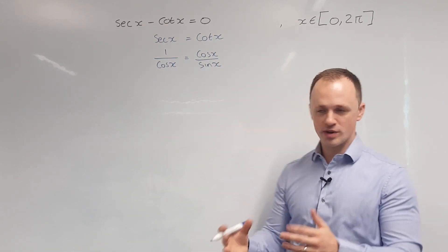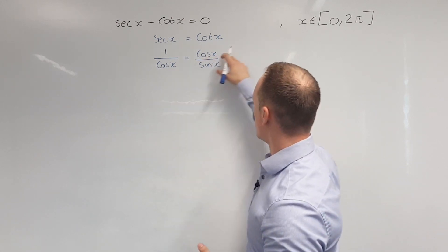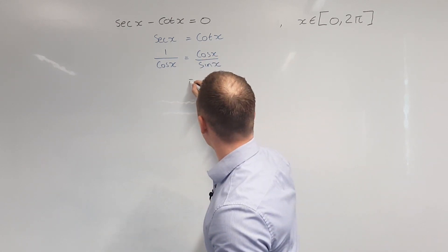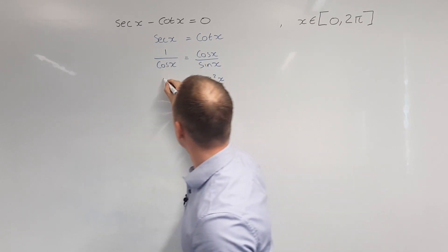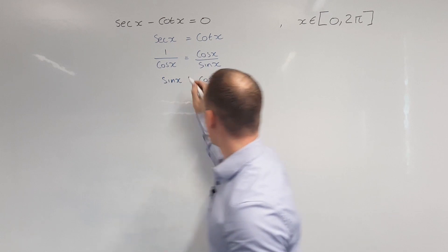Next, we're going to clear the fractions by multiplying up. So we're going to multiply up by cos x on the right, so we get cos squared x. And we're going to multiply up by sine x to the left to get sine x.